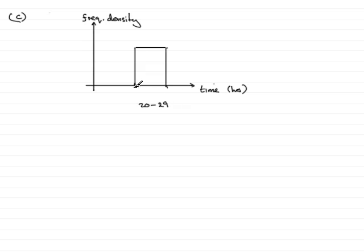Remember that this lower bound here would have to be on the time axis 19.5, not 20, and the upper bound here would be 29.5, because the time is measured to the nearest hour.